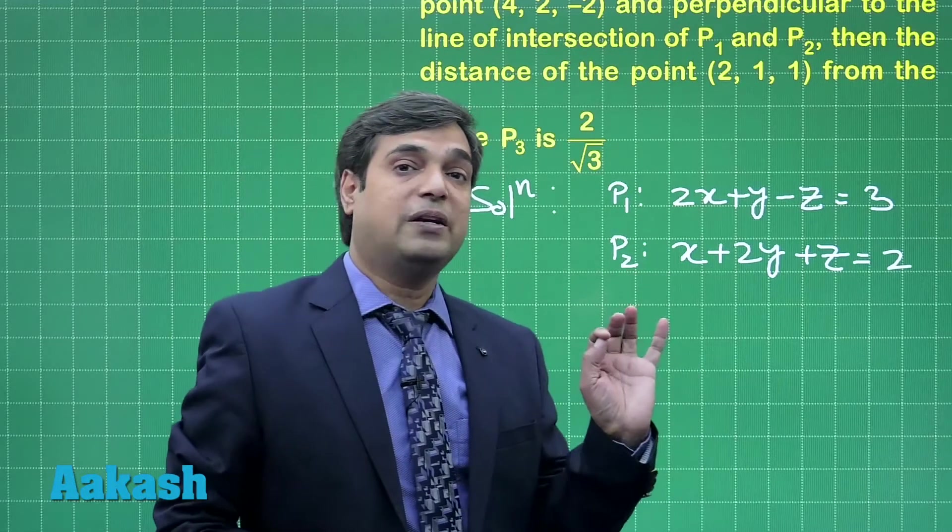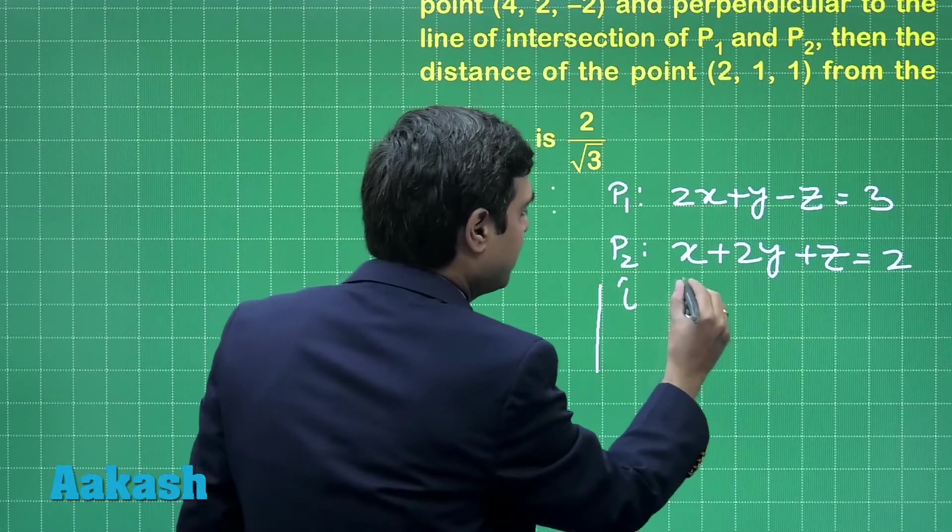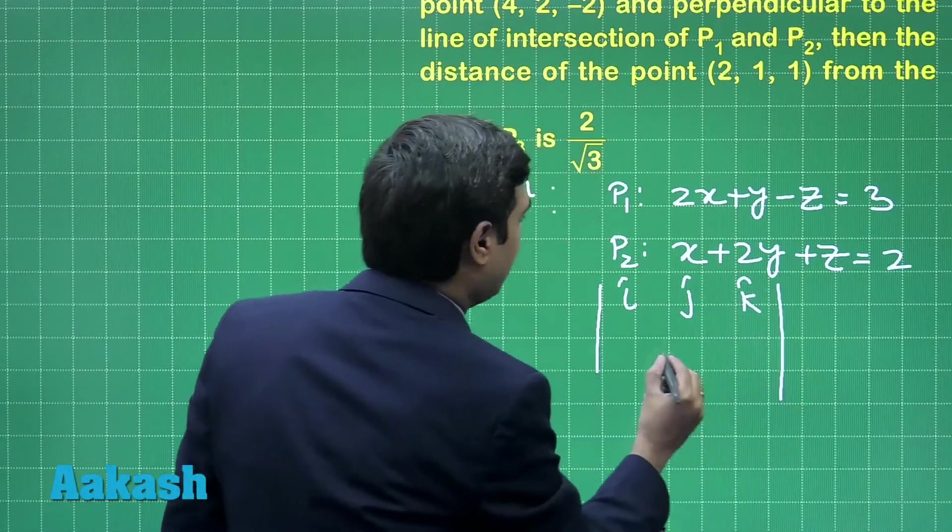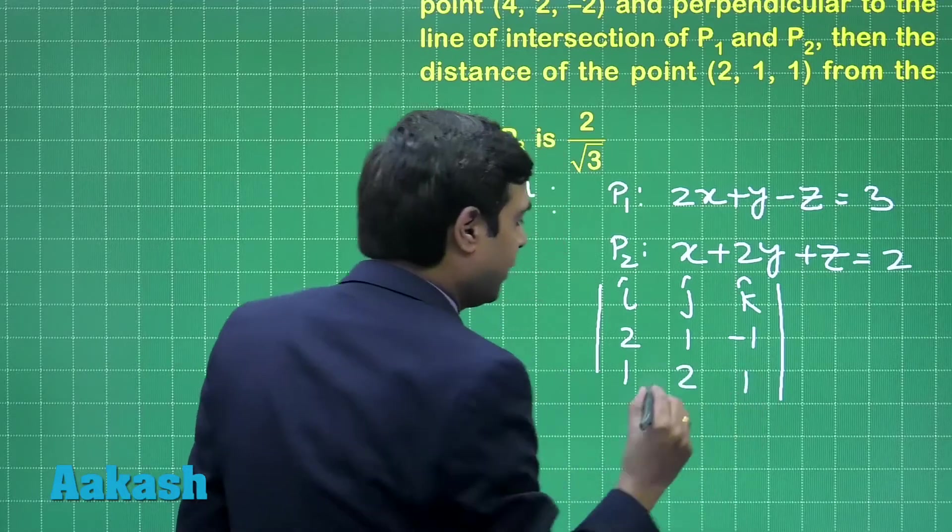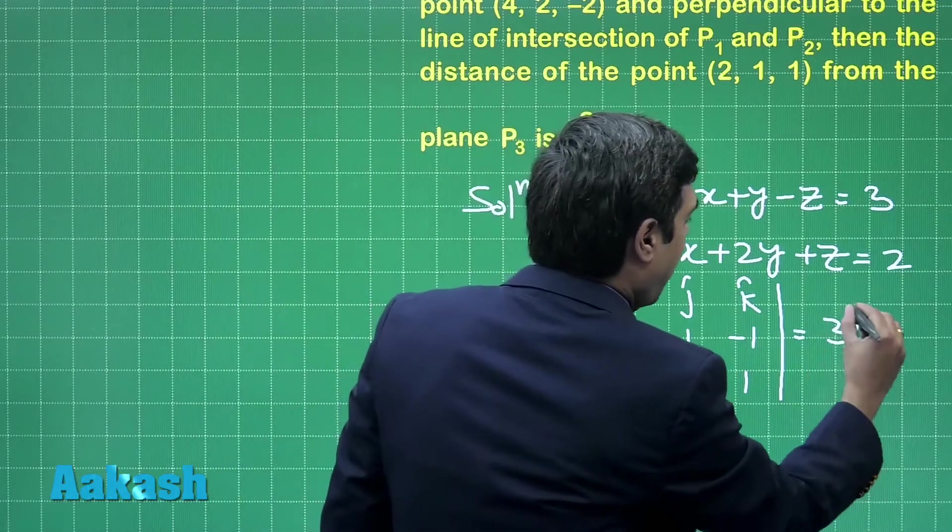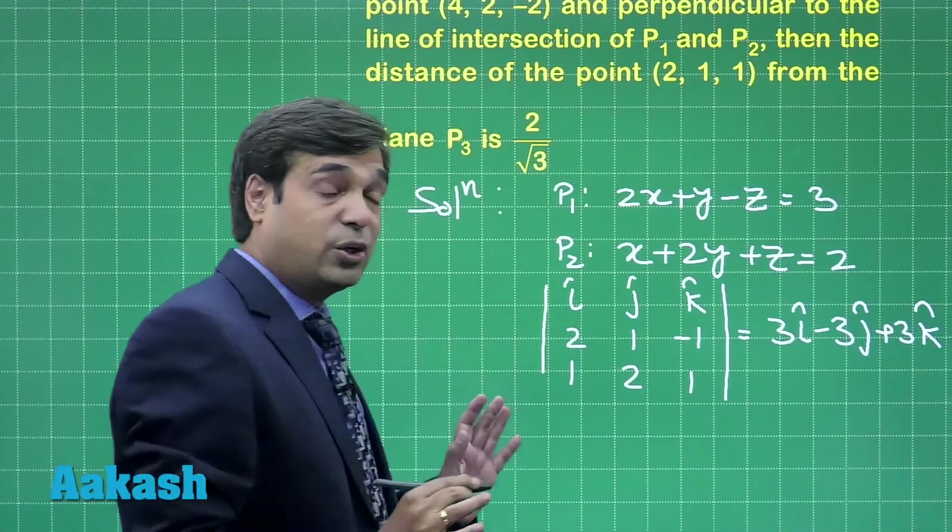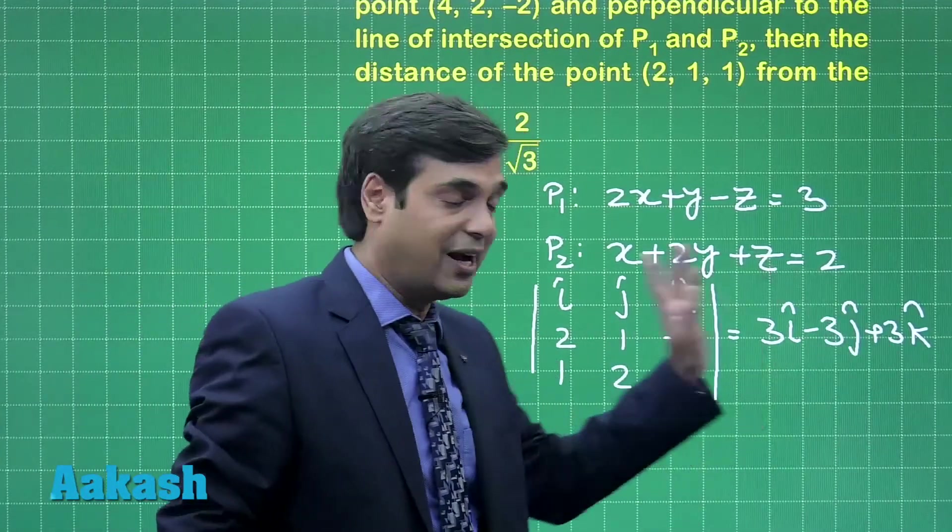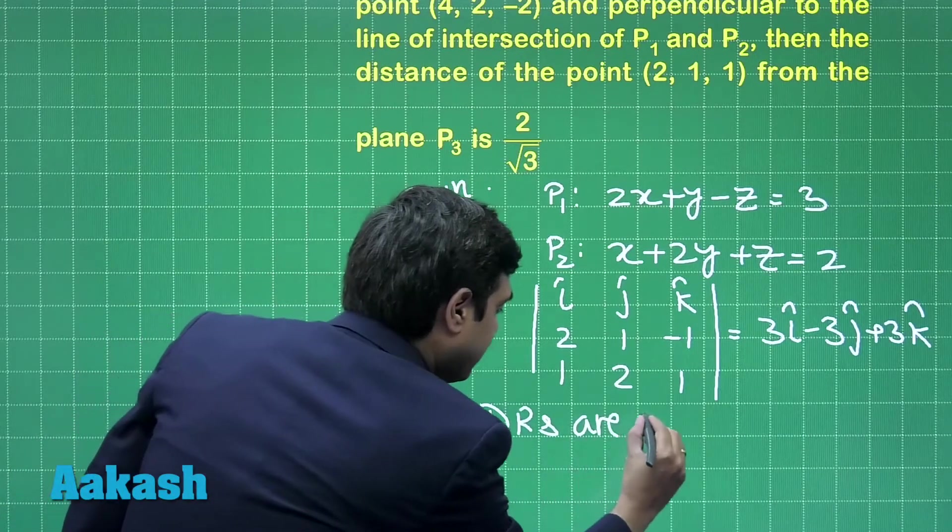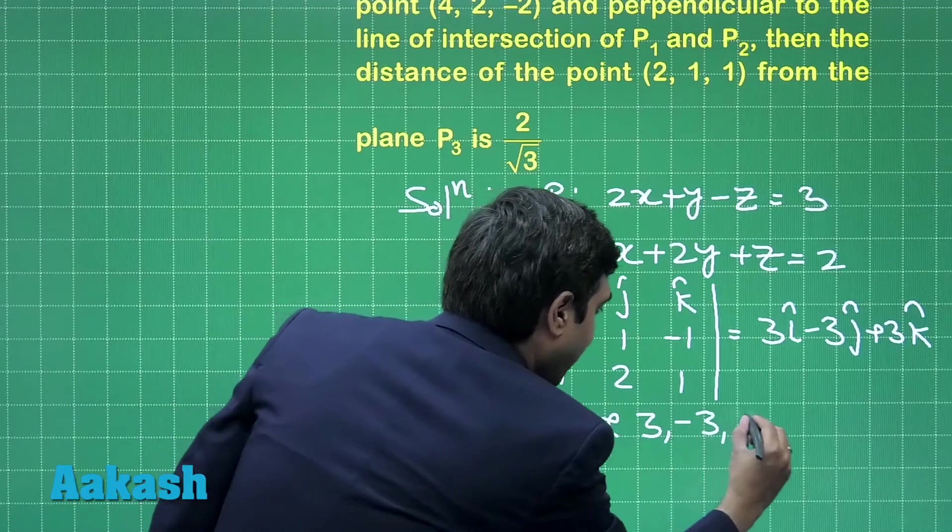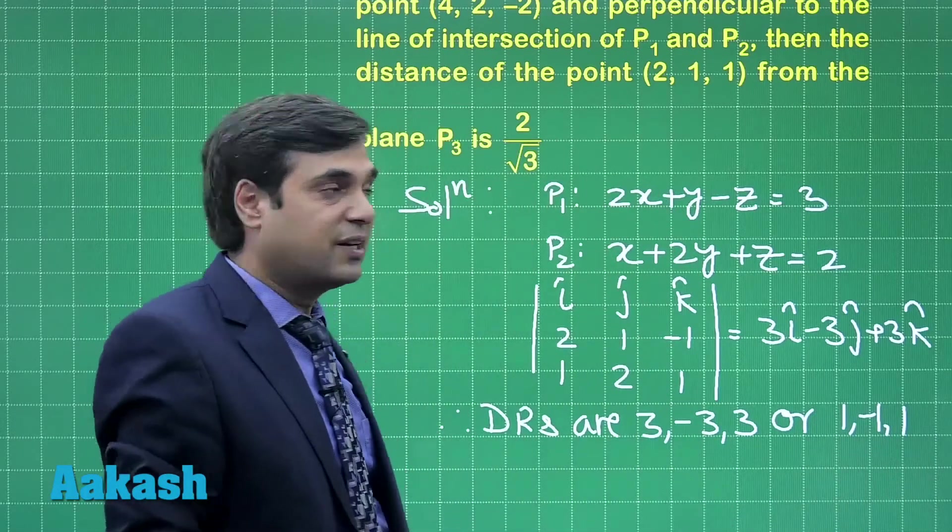Direction ratios of line of intersection of the two planes can be obtained using the determinant method: i j k, 2 1 minus 1, 1 2 1. Simplifying we get 3i minus 3j plus 3k. The direction ratios of the line are 3, minus 3, and 3, therefore direction ratios are 1, minus 1, 1.